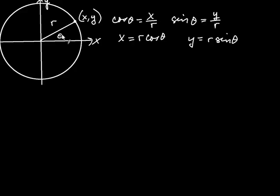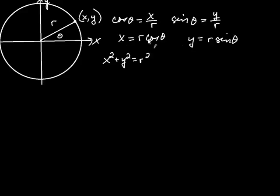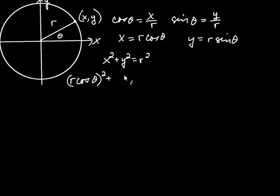From algebra, using the Pythagorean theorem, the equation of the circle is x² + y² = r². Since x and y can be written trigonometrically, we substitute to get (r·cos θ)² + (r·sin θ)² = r².